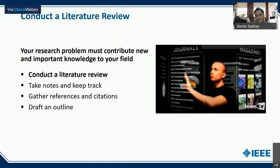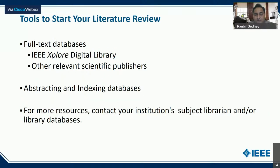Now that Professor Sharma has explained publishing in detail, how can we kickstart our publishing journey? First, ensure that your research problem contributes new and important knowledge. The very first thing an author will do is conduct a literature review. To conduct a literature review, you should have access to a database like IEEE Xplore Digital Library, which has more than 5 million full-text documents. There are also abstracting and indexing databases available, and last but not least, your librarian is the best person to guide you in this regard.